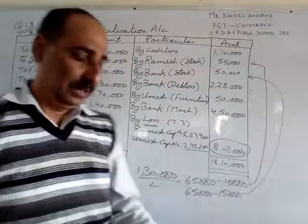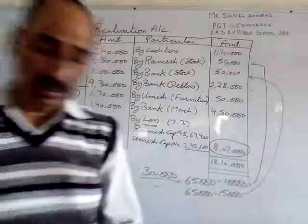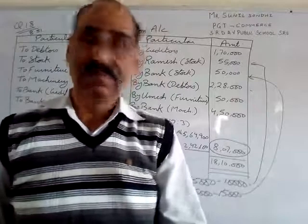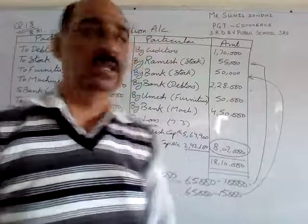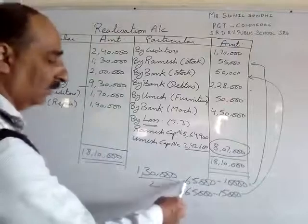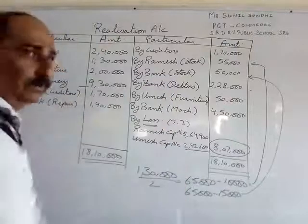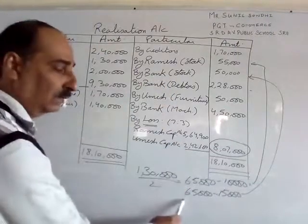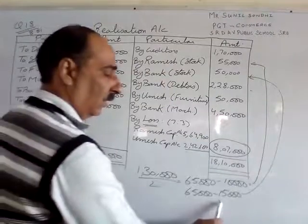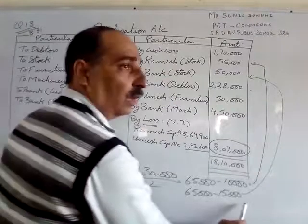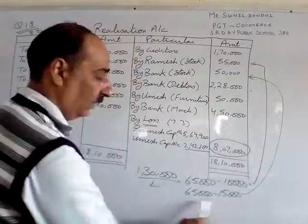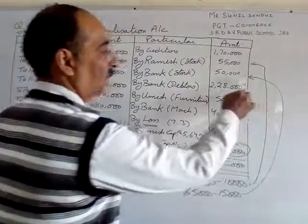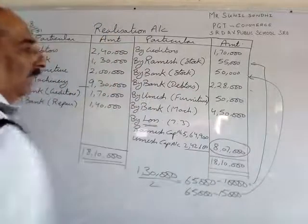The remaining stock was sold at a loss of 15,000. Remaining stock kitna bacha? Aadha stock Ramesh ne le liya, baaki aadha stock yaane 65,000 ko 15,000 less par becha. Value aayegi 50,000 — by bank (stock) 50,000 rupees.